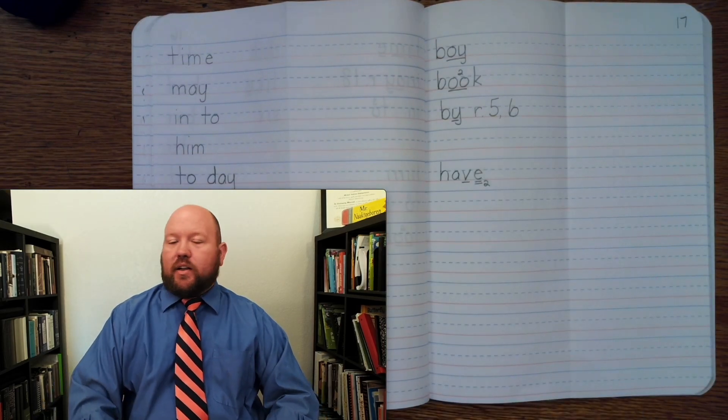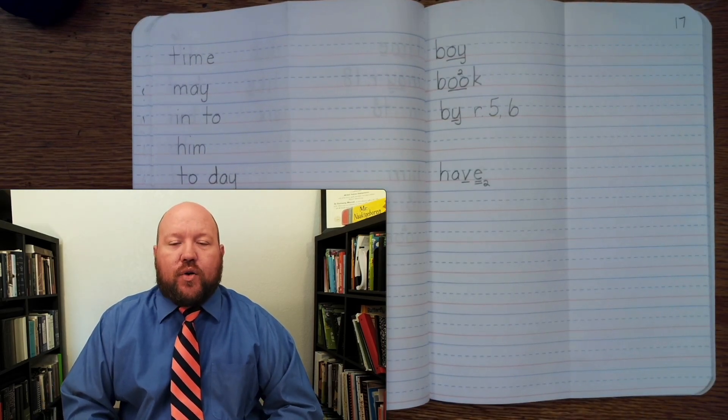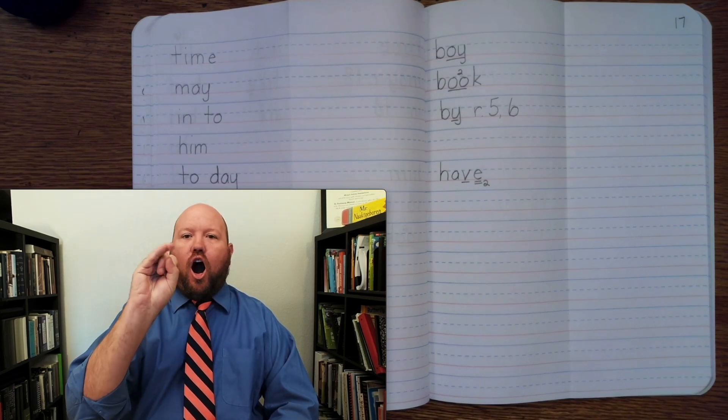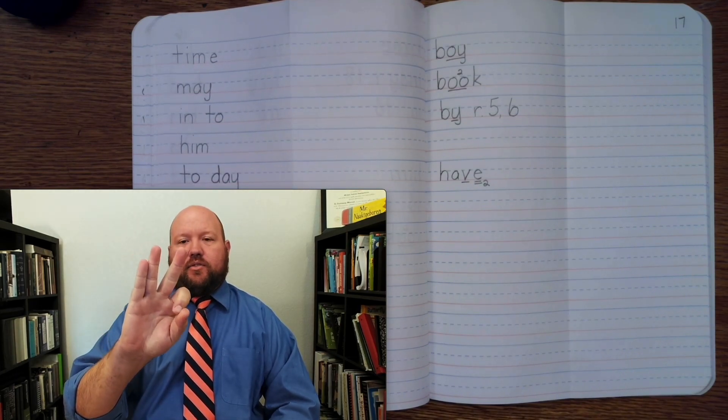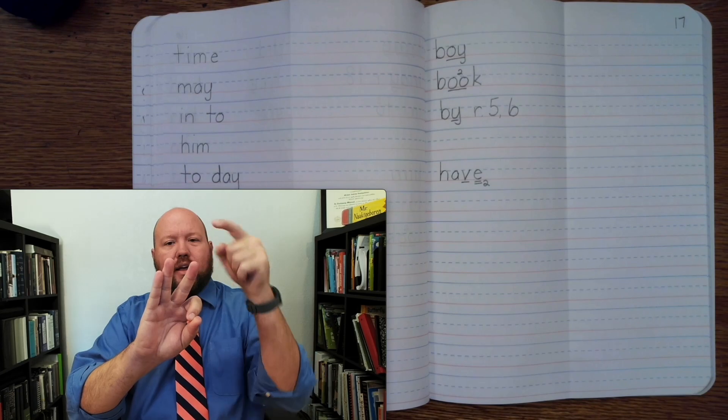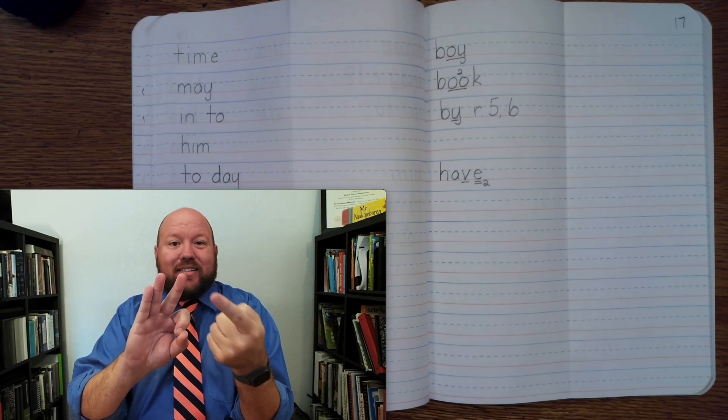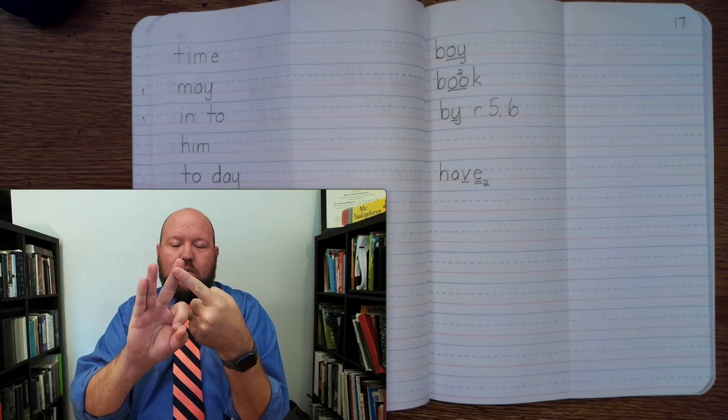The next word is the word are. Like, are you happy? Are. So here we have our two-letter form. Are. And with an E, that's really not doing anything. It's a no job E. It's just there. Okay?